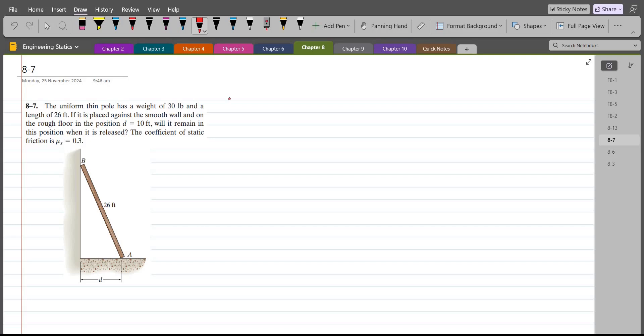According to this problem, the uniform thin pole has a weight of 30 lb and a length of 26 feet. If it is placed against the smooth wall and on the rough floor in the position where d is 10 feet, will it remain in this position when it is released? The coefficient of static friction is given as 0.3.